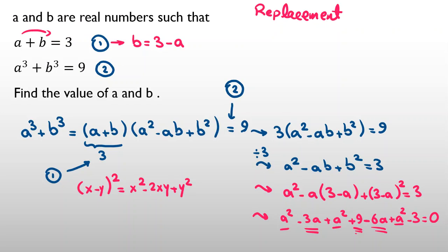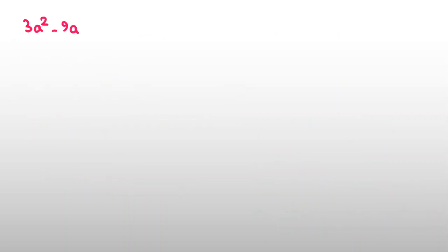Then we have 9 minus 3 will be plus 6 equals 0. If we divide both sides by 3, a squared minus 3a plus 2 equals 0. And here it will be (a minus 1) times (a minus 2) equals 0.